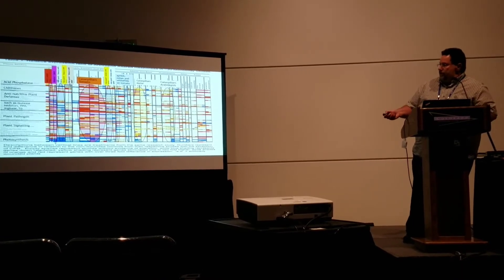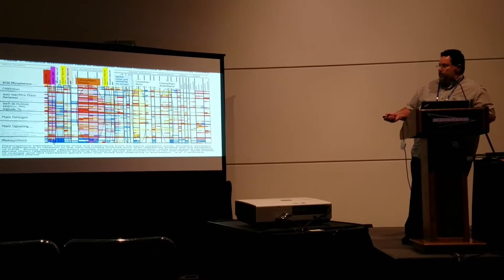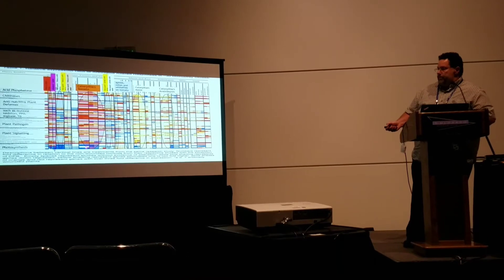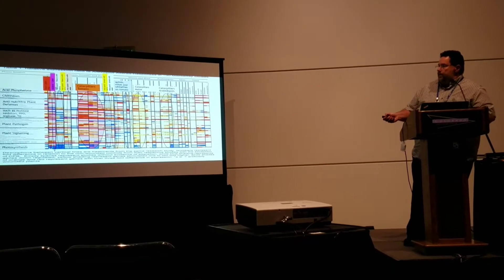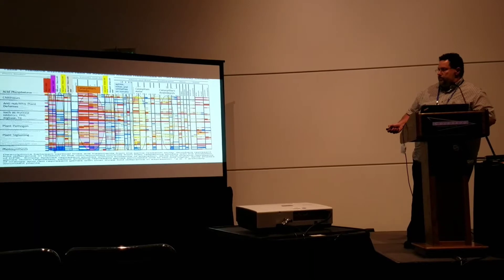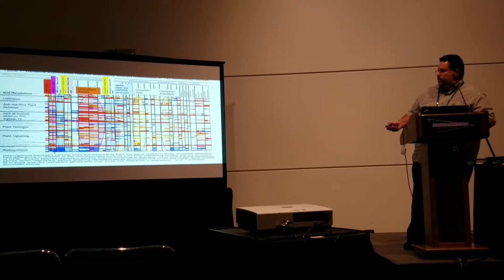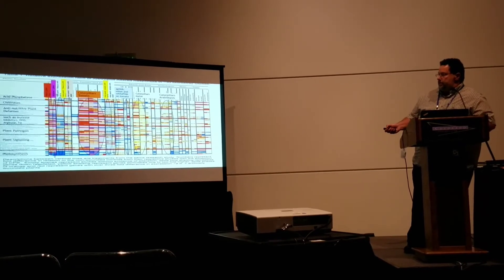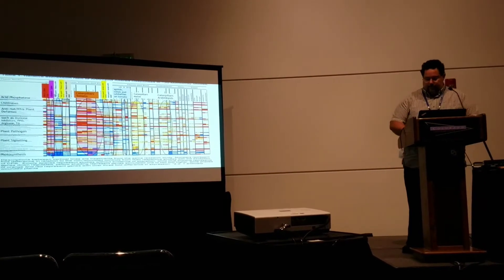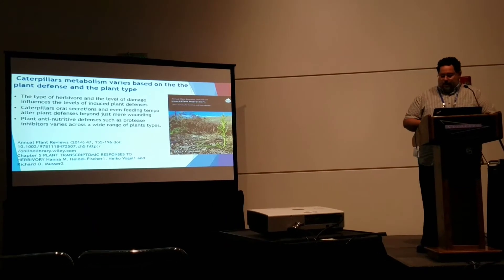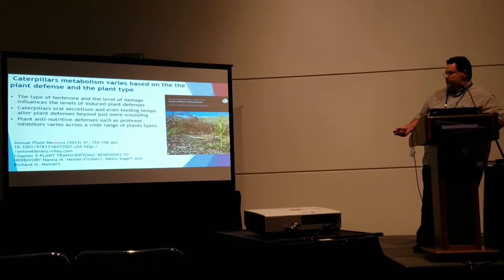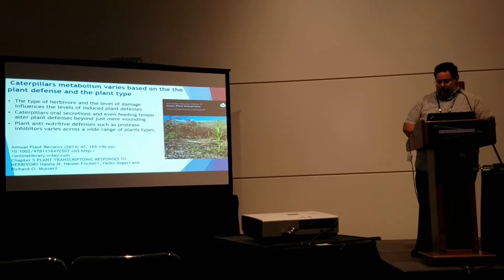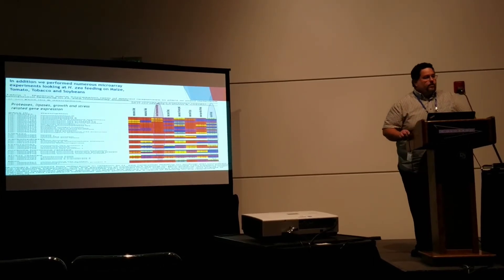If you look at this graph, the red spots represent genes like protease inhibitors that are being upregulated, while blue represents something being downregulated. So when caterpillars are feeding on a plant, they're downregulating photosynthesis in those leaves but stimulating protease inhibitors and so forth. They're doing more of this in tomato leaves than in maize plants, at least in the studies we've done. Chewing insects are really good at stimulating those kinds of defenses. We summarized this work a few years ago in the Annals of Plant Reviews, Chapter 5, looking at the transcriptomic response.